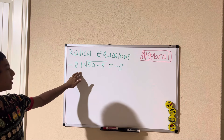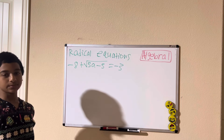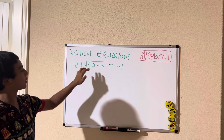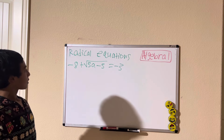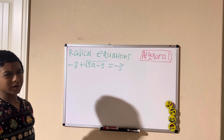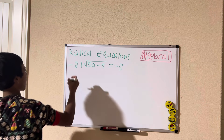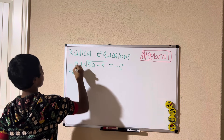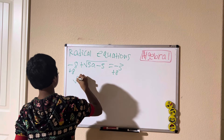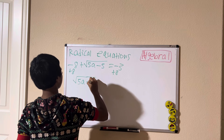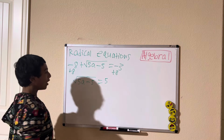Try this tricky one: negative 8 plus the square root of 5a minus 5 equals negative 3. So to start, we're not going to square right away because we have other terms. First I'm going to add 8 to both sides, giving us the square root of 5a minus 5 equals 5 (since negative 3 plus 8 is 5).